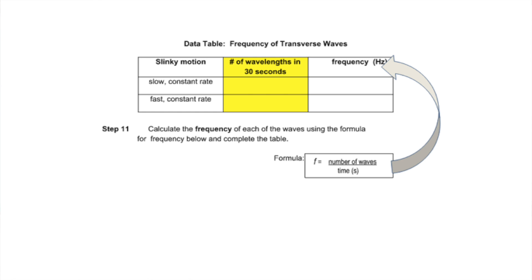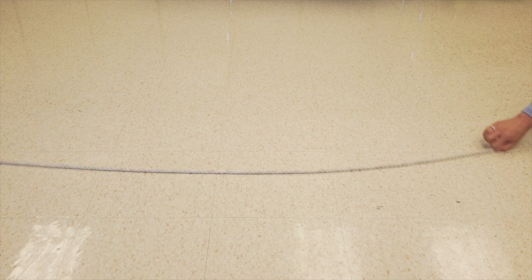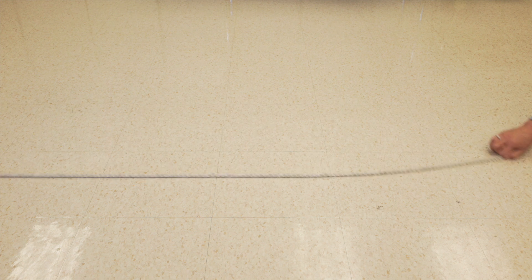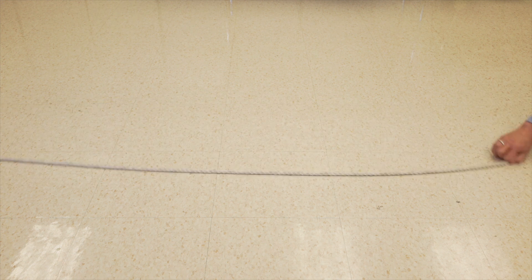Turn to the data table on slide four. You will be filling in the middle column as I perform the next two activities. First, I make waves at a slow constant rate. Since each wave has only one crest, I'll count the number of times my hand reaches the top spot as the start of each new wave. The directions tell us to count the number of waves that occur in 30 seconds. Record that number in the top box. Ready?